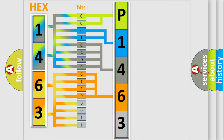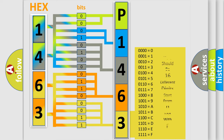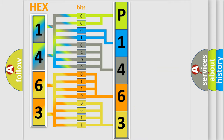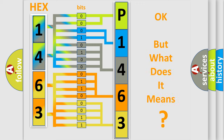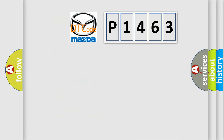A single byte conceals 256 possible combinations. We now know in what way the diagnostic tool translates the received information into a more comprehensible format. The number itself does not make sense to us if we cannot assign information about what it actually expresses. So, what does the diagnostic trouble code P1463 interpret specifically for Mazda car manufacturers?